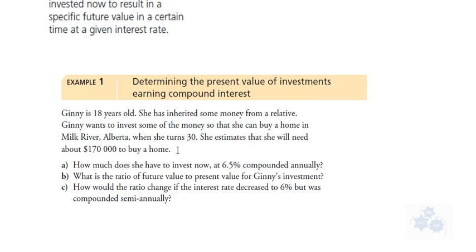Okay, so I'm not sure how much money she has right now, but she wants to figure out exactly how much money she needs to put aside to make this happen. So how much money does she have to invest now at 6.5% compounded annually?